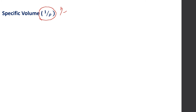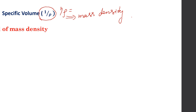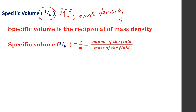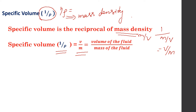The next property is specific volume. It is represented by 1 by rho — that is, specific volume is the reciprocal of mass density. Since mass density is mass by volume, taking its reciprocal gives us volume by mass: the volume of the fluid divided by the mass of the fluid. The SI unit for specific volume is meter cube per kilogram.